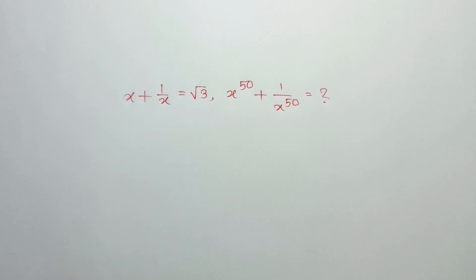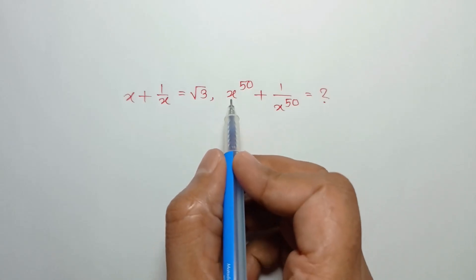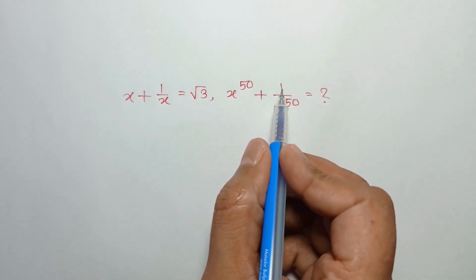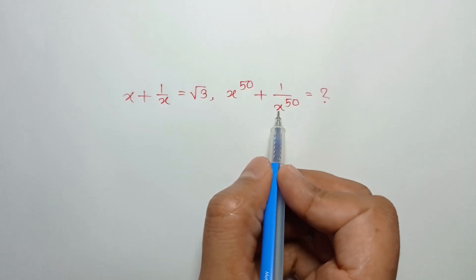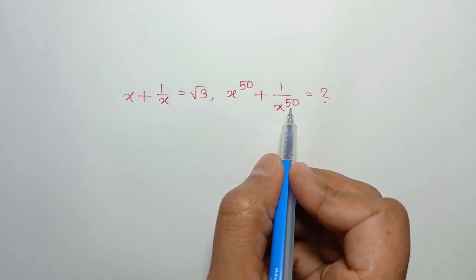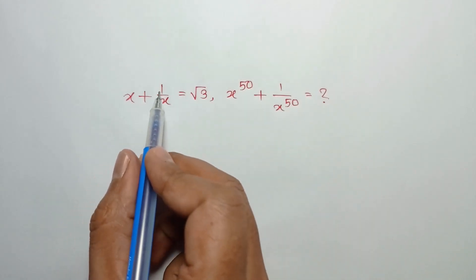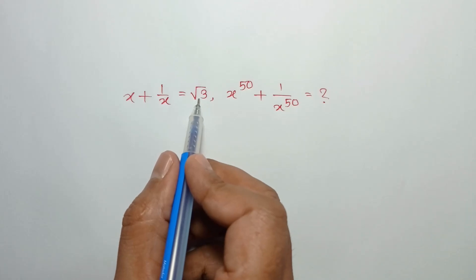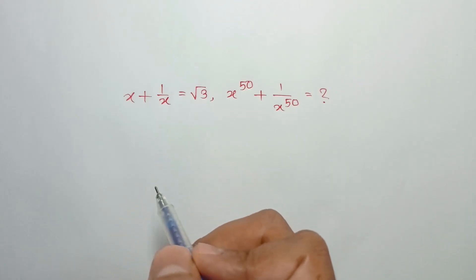Hi everyone. In this video I am going to show how to find the value of x to the power 50 plus 1 over x to the power 50, where x plus 1 over x is equal to square root of 3.